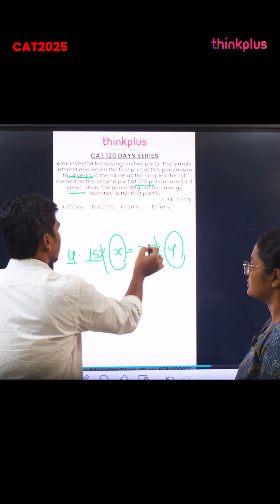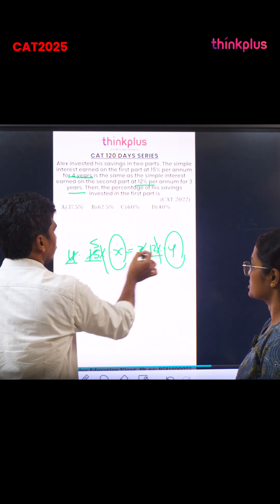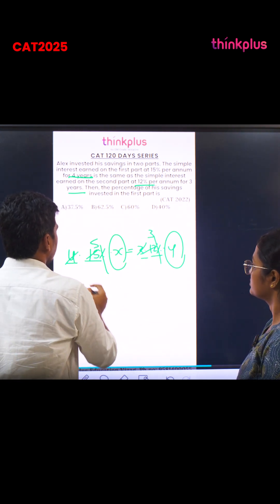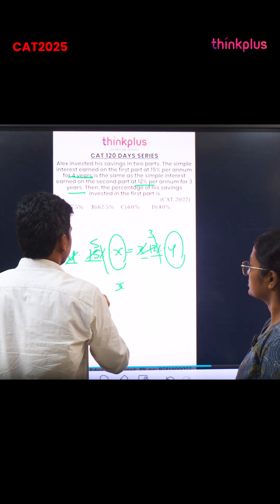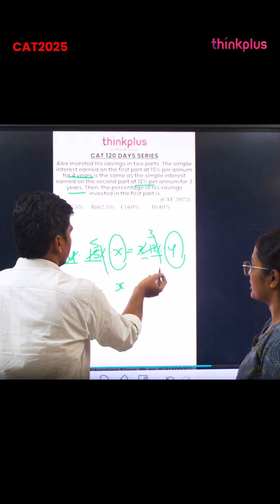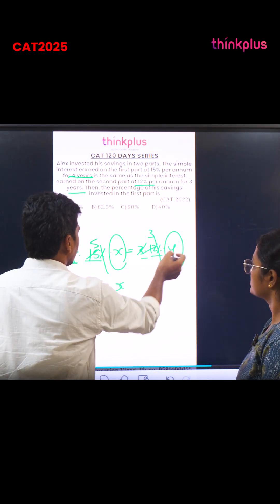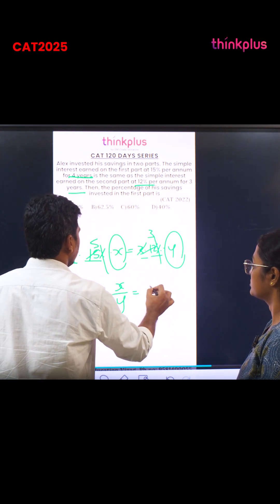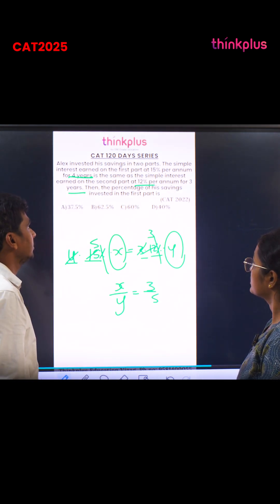Percentage cancels. 3 goes into 15 five times, and 4 goes into 12 three times. So finally we get X = (3/5)Y. This four is also cancelled. So X/Y = 3/5.